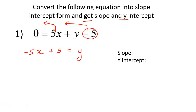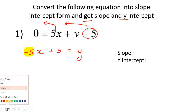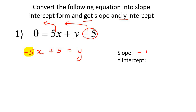Remember, the number that is in front of the x is the slope. So the slope would be minus 5, and then the y-intercept would be the other number, which is positive 5.